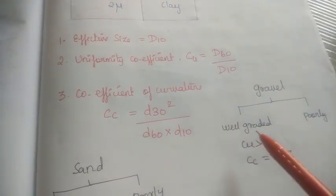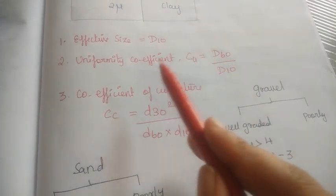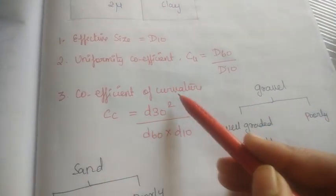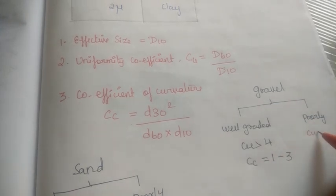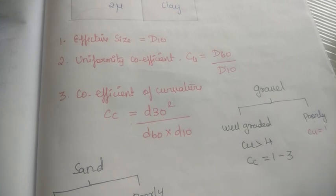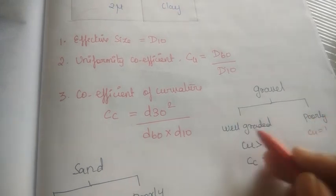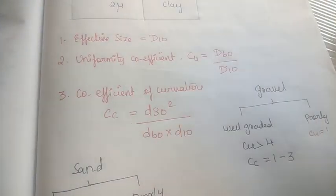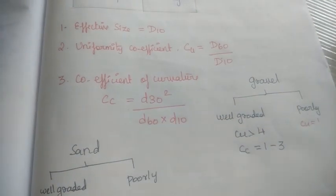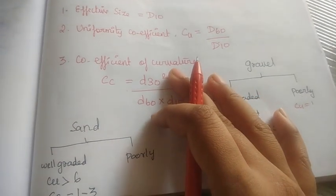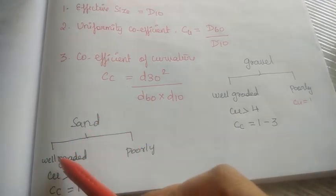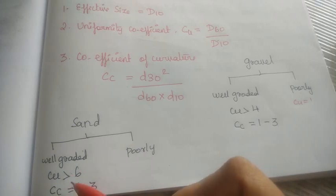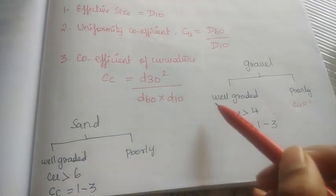If there is gravel, it is well graded or poorly graded. We have the uniformity coefficient. For well graded gravel, Cu must be greater than or equal to 4, and Cc must be between 1 and 3. If Cu equals 1, it is skip graded. For well graded sand, Cu must be greater than or equal to 6, and Cc must be between 1 and 3. Note this for one-mark questions.